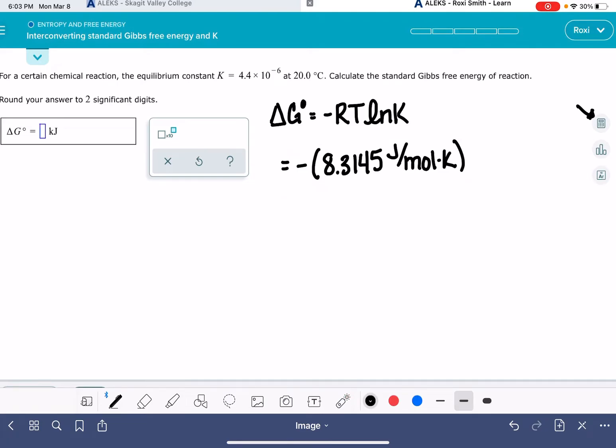We want to multiply this by our temperature in units of Kelvin. Our temperature is 20 degrees and that means we need to add it to 273.15. So our temperature is going to be 293.15 Kelvin.